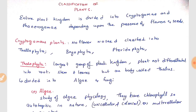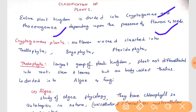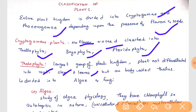The entire plant kingdom is divided into cryptogamy and phanerogamy depending upon the presence of seeds and flowers. Cryptogamous plants don't have flowers or seeds. They are classified into thalophyta, bryophyta, and pteridophyta. Thalophyta is the largest group of the plant kingdom — its plants are not differentiated into roots, stem, and leaves. The undifferentiated body is called thallus, and this group is divided into algae and fungi.